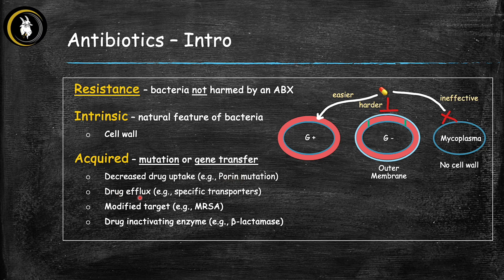The second mechanism is drug efflux — the bacteria tells the antibiotic to get out. The antibiotic can get in, but the bacteria have developed specific transporters that pump it right back out before it can kill the bacteria, so the bacteria becomes resistant. The third acquired resistance is modified target — the bacteria has changed the target of that antibiotic, so once the antibiotic gets in it can't recognize the target and can't do its job, making the bacteria resistant.